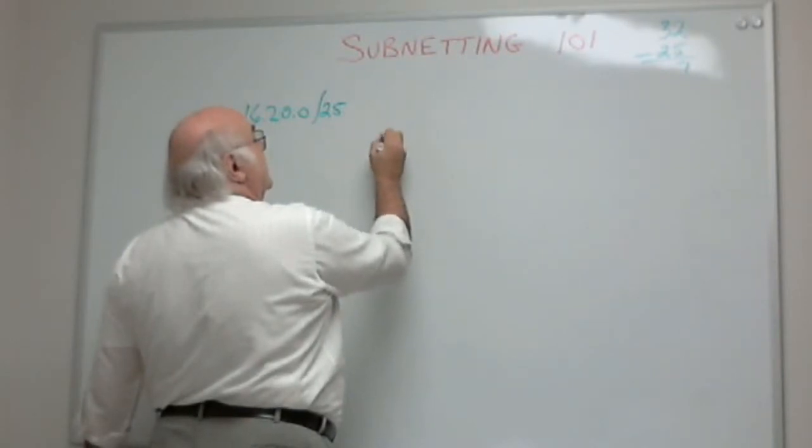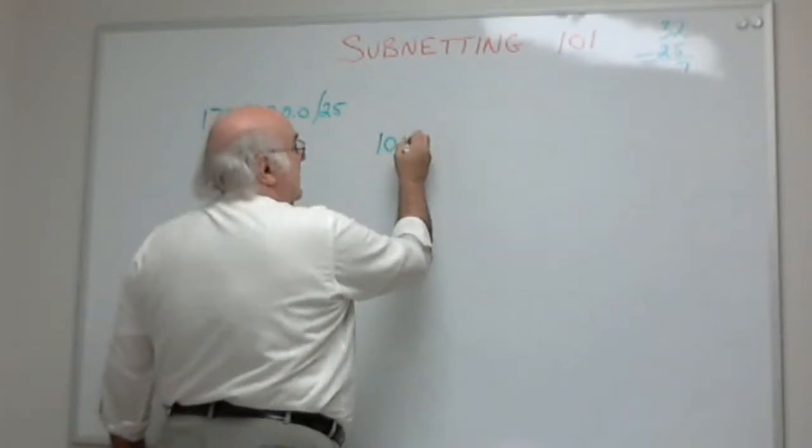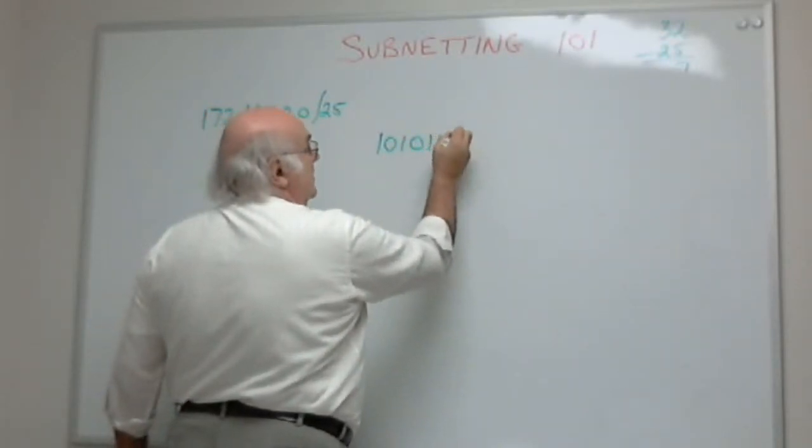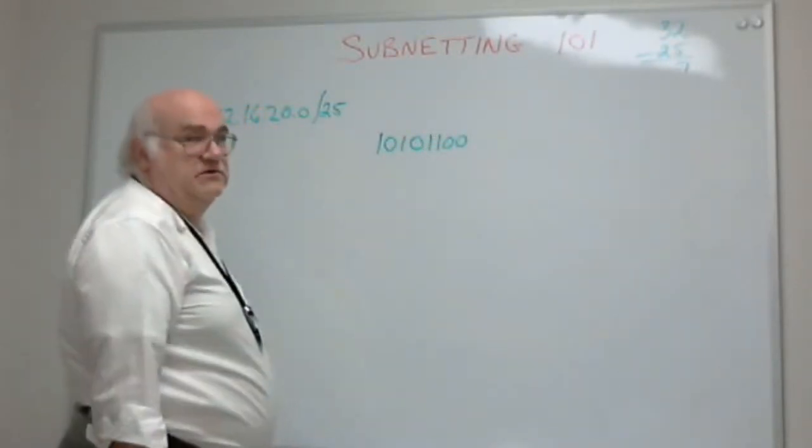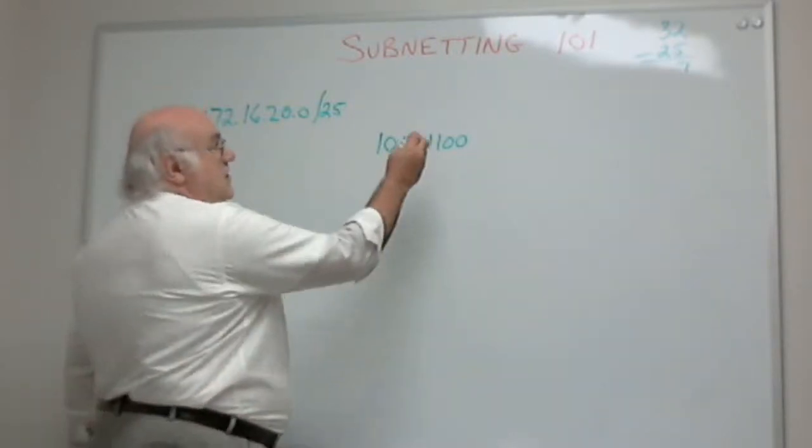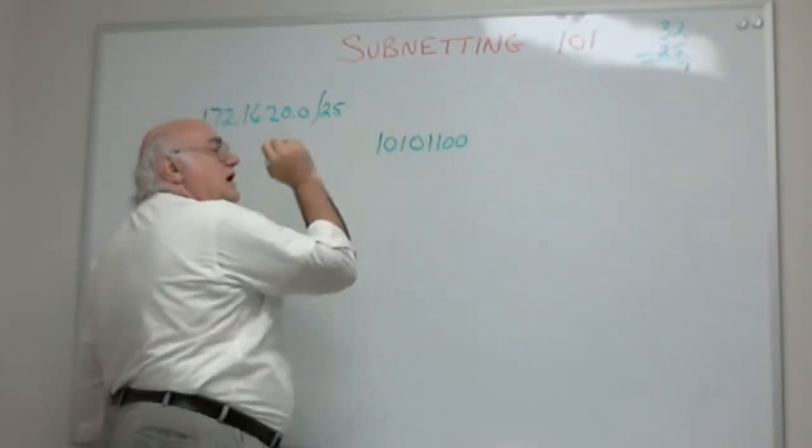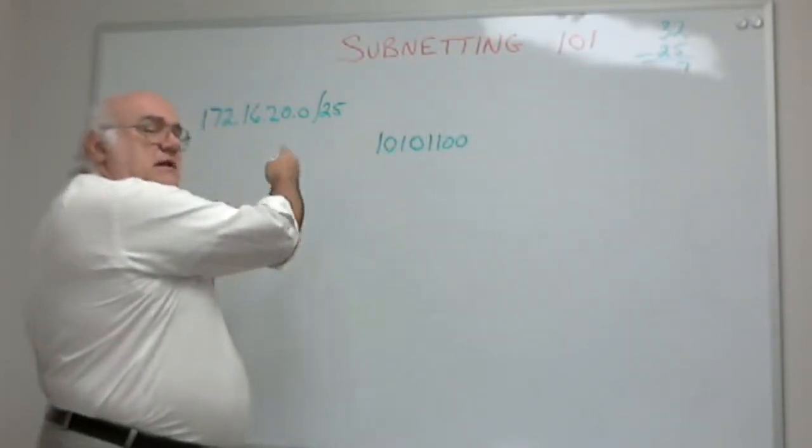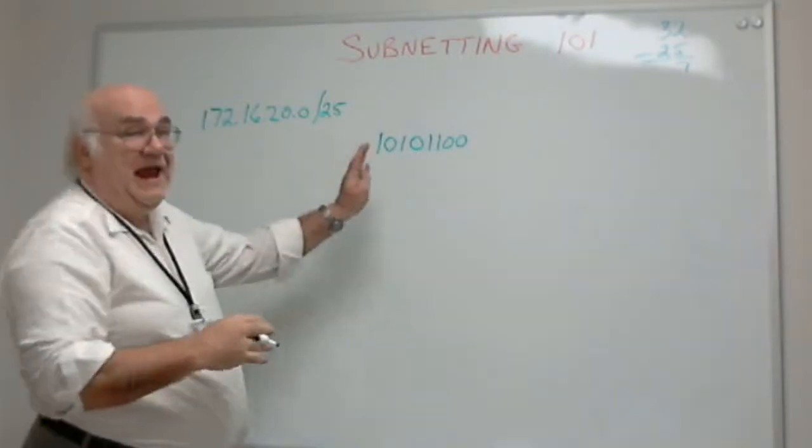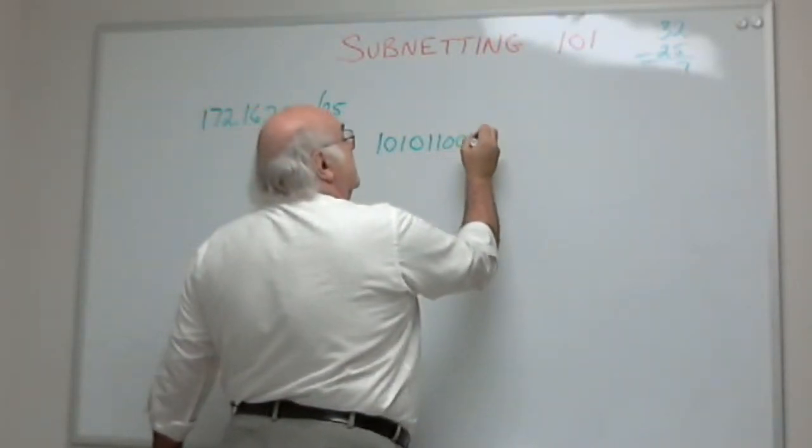172 is 128 and 32 is 160, and then I need 12 more. There's 172 in binary, 8 bits. Remember the positional values: 1, 2, 4, 8, 16, 32, 64, 128. We double as we move to the left, we halve as we move to the right.